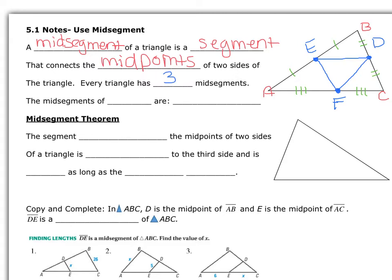Triangle ABC has mid-segments: segment DE, segment DF, and segment FE. That's the definition of a mid-segment — it is a segment that connects midpoints. Every triangle has three of them: ED, DF, EF. Now these mid-segments come with properties, so let's learn about the first property.